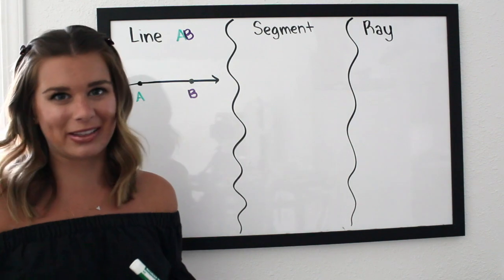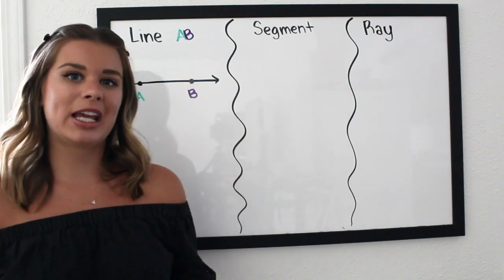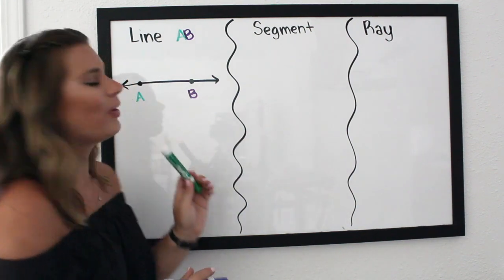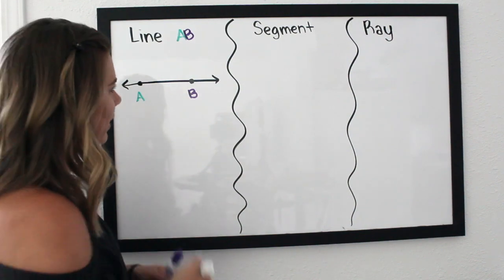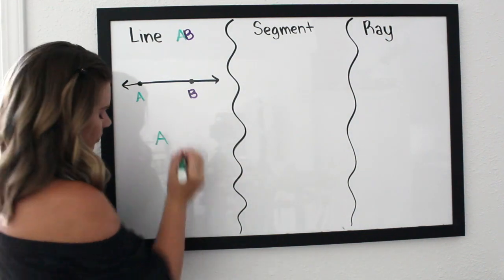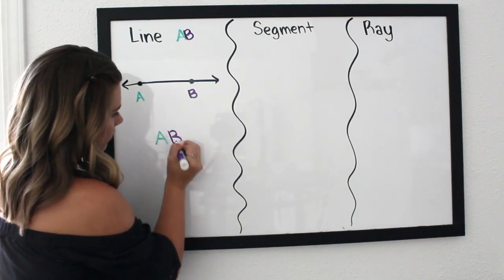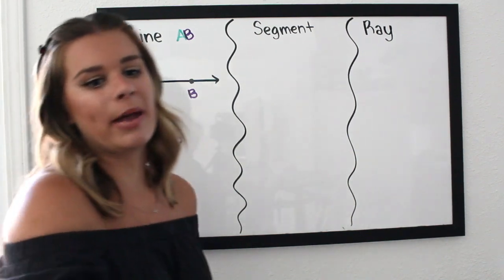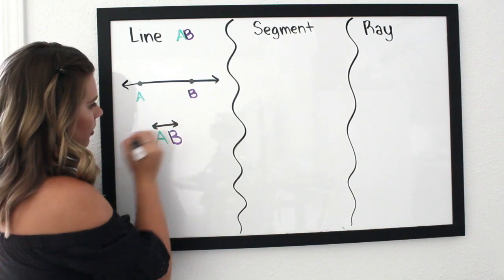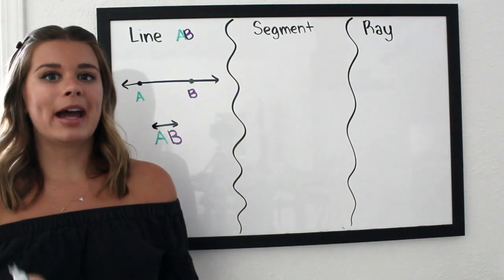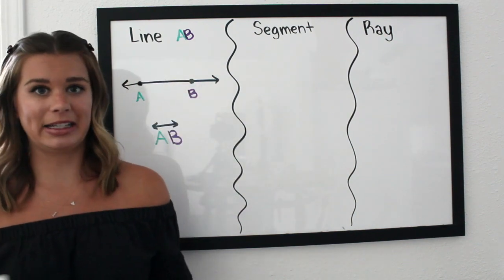Geometers are a little bit lazy because we don't want to write out the word 'line' every single time. So we have a notation: instead of writing out 'line AB,' we write the letters AB and above them we draw a line with arrows on both ends.